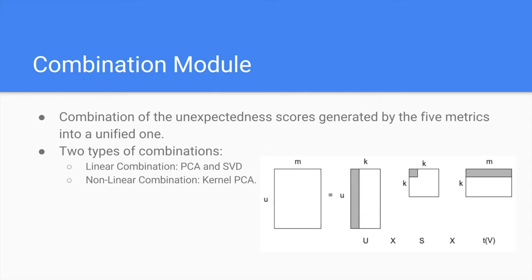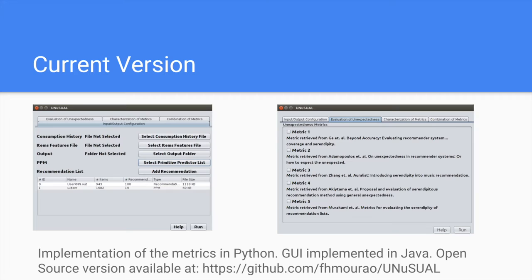Lastly, in the combination module, we employ matrix factorization techniques for combining different unexpectedness scores for the recommendation list of each user. The main result is a unified metric for evaluating unexpectedness. For this, we implemented three methods: PCA, SVD, and kernel PCA. We use the first principal component of PCA and kernel PCA to reconstruct the matrix and make a linear combination of the unexpectedness scores for each metric, resulting in a unified metric. The same can be done with SVD. For facilitating the use of our framework, we implemented a tool called UNUSUAL — Unexpectedness Unified Analysis — where we organized the five metrics, and the user can select what sort of statistical summarization and combination they desire. The tool is available as open source code on GitHub.